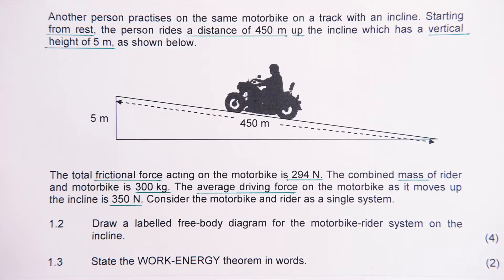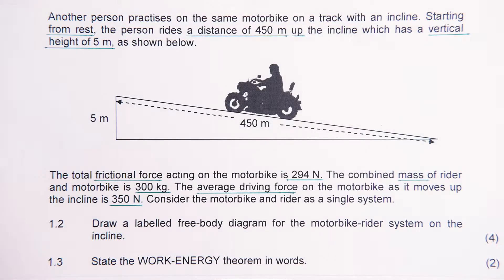In the next section, another person practices on the same motorbike on a track with an incline. Starting from rest, the person rides a distance of 450 meters up the incline, which has a vertical height of 5 meters. The total frictional force acting on the motorbike is 294 newtons. The combined mass of the rider and the motorbike is 300 kilograms. The average driving force on the motorbike as it moves up the incline is 350 newtons. Consider the motorbike and rider as a single system.